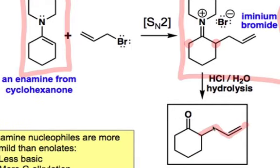The second advantage is that only C-alkylation takes place. This has to do with the fact that the enamine lone pair is much less nucleophilic than, say, the oxygen atom of an enolate, and is also protected through steric hindrance provided by the adjacent carbon atoms.